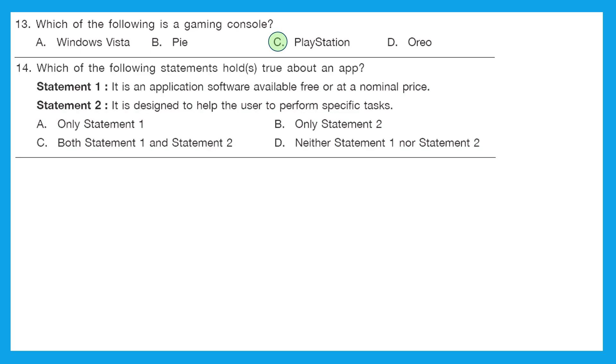Question 14: which of the following statements hold true about an app? Statement 1: it is an application software available free or at nominal price. That's true. Most of the apps are. Statement 2: it is designed to help the user to perform specific tasks. That is also absolutely right. So the right answer should be option C, both statement 1 and statement 2.